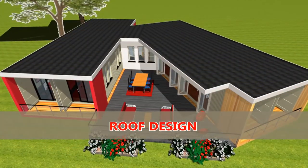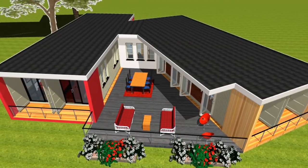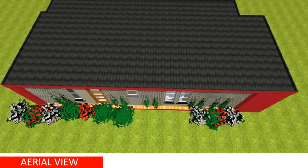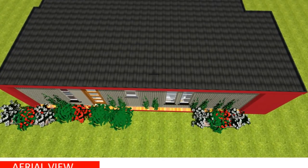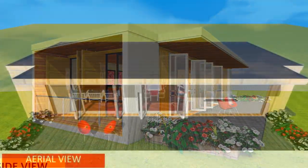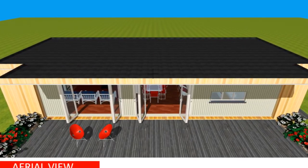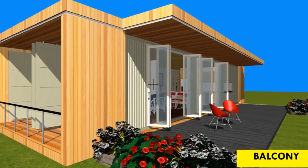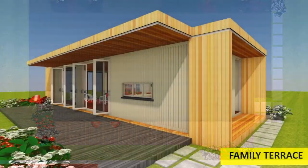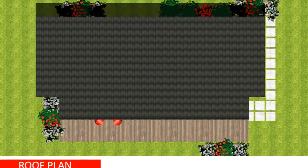Roof design: every base model of Inbox 1280H is covered with a signature standing seam flat roof with a side extension to cover the outdoor family terrace and the Juliet balconies. When setting out your foundation, remember to add some extra space to accommodate the deck or the family terrace. Other roof types, like a gentle sloped corrugated roof cover and a planted living roof, can also be used.